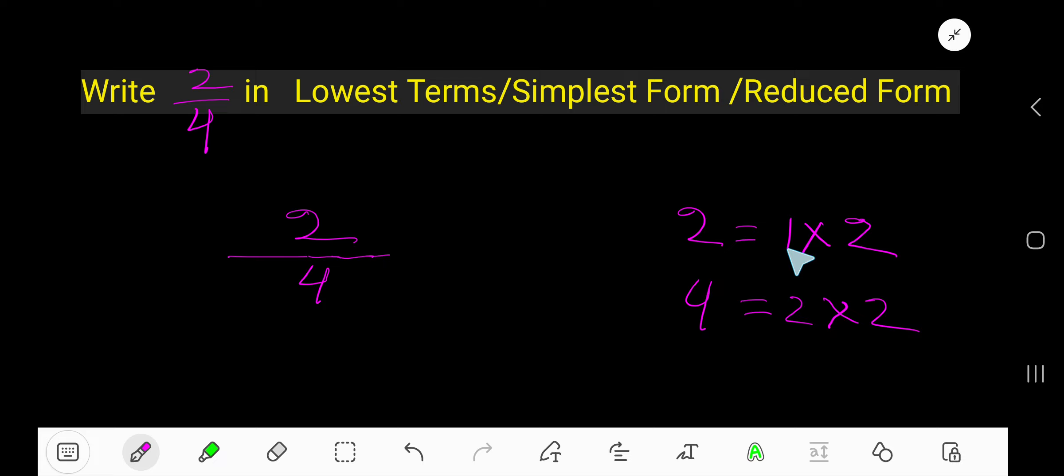1 times 2 equals 2, so 1 and 2 are the factors of 2. 2 times 2 equals 4, so 2 is the factor of 4.